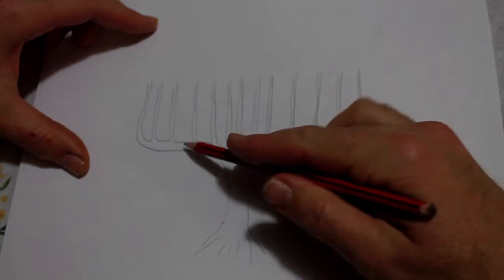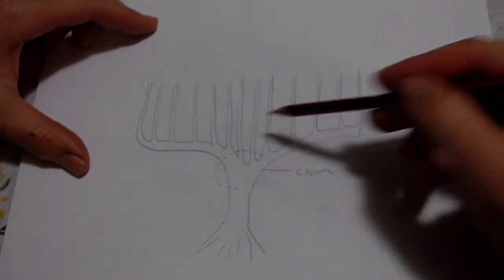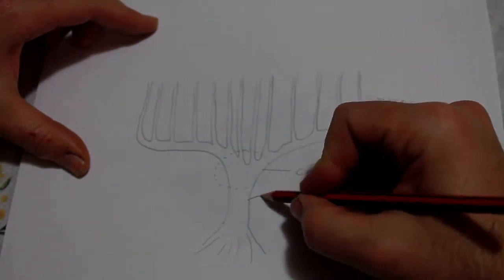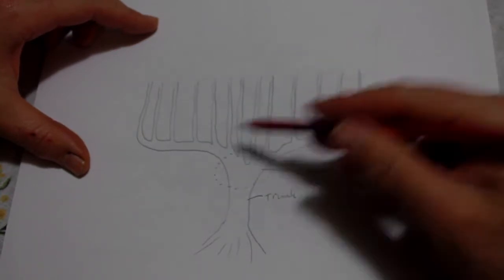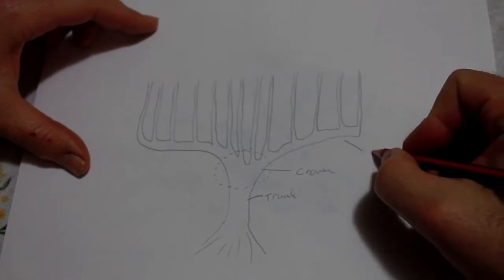The two arms of the grapevine that branch out from the trunk, this is the trunk. The two arms that branch out from the trunk, one on either side, are called the cordon.